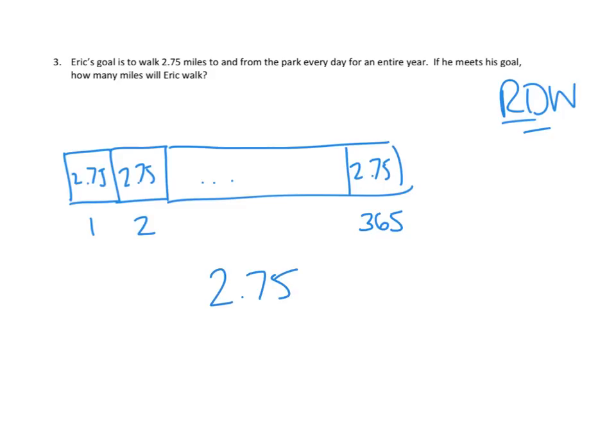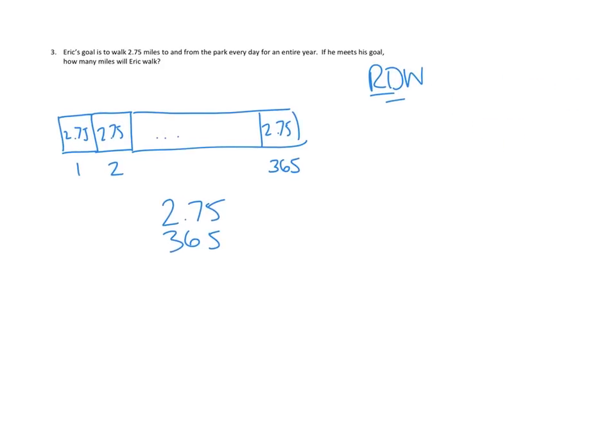2 and 75 hundredths times 365 with the standard algorithm. So again, I think we're going to use the strategy we've used here in the past, which is we're going to treat this number as if it's 275 by essentially multiplying it by 100. And then at the end, when we get our answer down here somewhere, we're going to remember to divide it by 100 to get to our answer. So let's go ahead and do our standard algorithm. 5 times 5 is 25, like that. 5 times 7 is 35, plus 2 more is 37. We've used up that 2. Here's our 3. 5 times 2 is 10, plus 3 more is 13. And we use up that 3. And we've got our first partial product. 5 times this number, 275, is this partial product, 1,375.